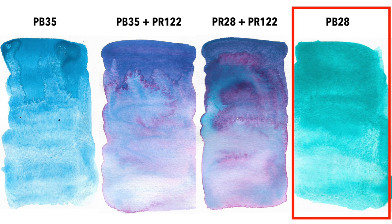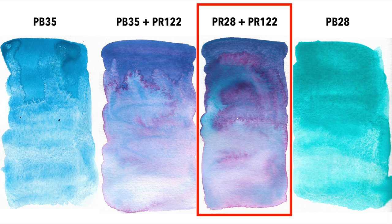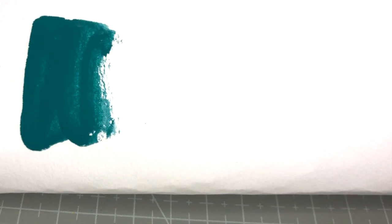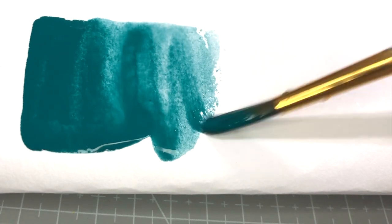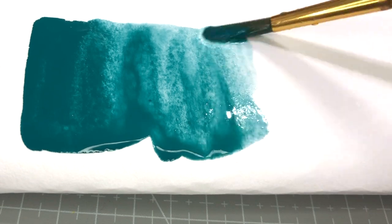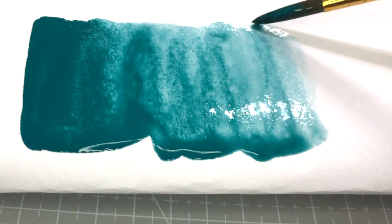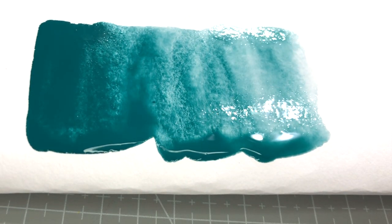Their Cobalt Turquoise PB28 also gives a similar result when mixed with the same Quin Magenta. And then we have here Cobalt Green Deep, made with PB36, which is one of my favorite colors to mix with Quin Magenta or Quin Rose to get this gorgeous, moody violet. You can clearly see the green turquoise in some areas of the swatch.